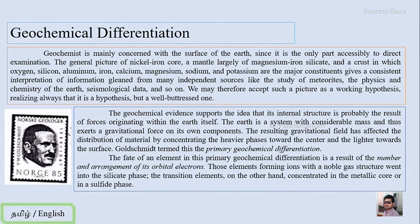The fate of an element in this primary geochemical differentiation is a result of the number and arrangement of its orbital electrons. Thus elements forming ions with a noble gas structure went into silicate phase. The transition elements, on the other hand, concentrate in the metallic core or in the sulphide phase.